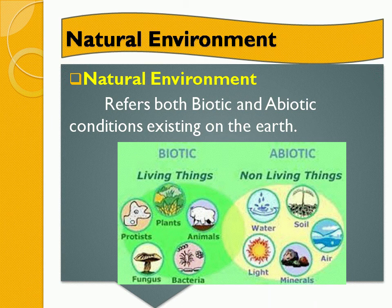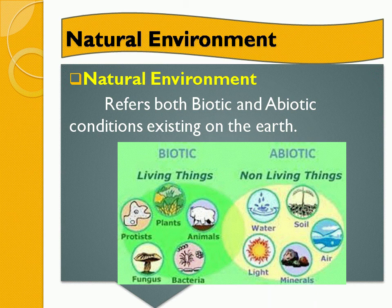In this natural environment, we are going to learn about biotic and abiotic organisms. It refers to both biotic and abiotic conditions existing on the earth. Abiotic means non-living things, such as water, soil, air, minerals and light. Biotic means living things — plants and animals.